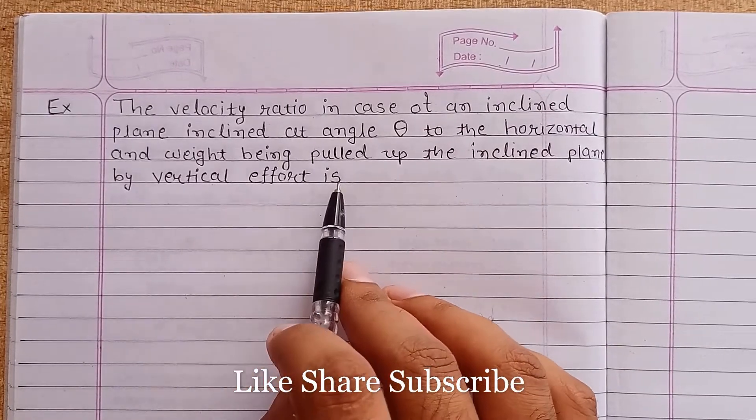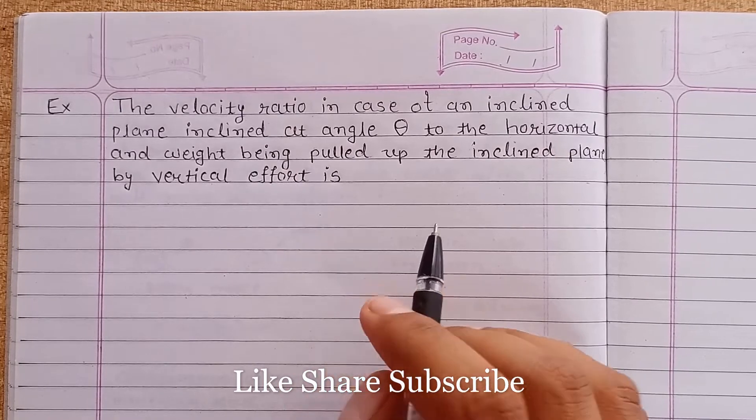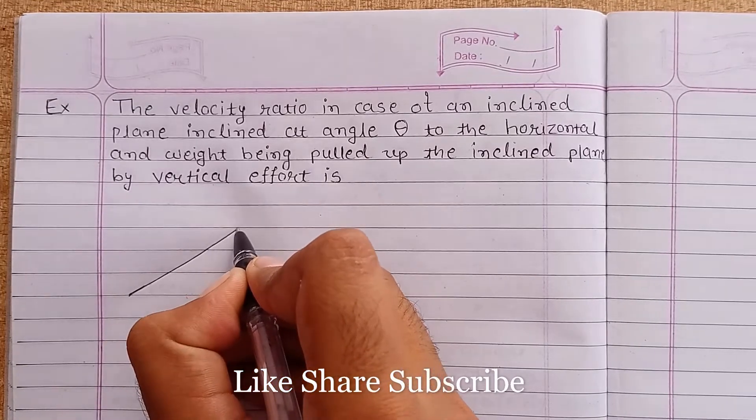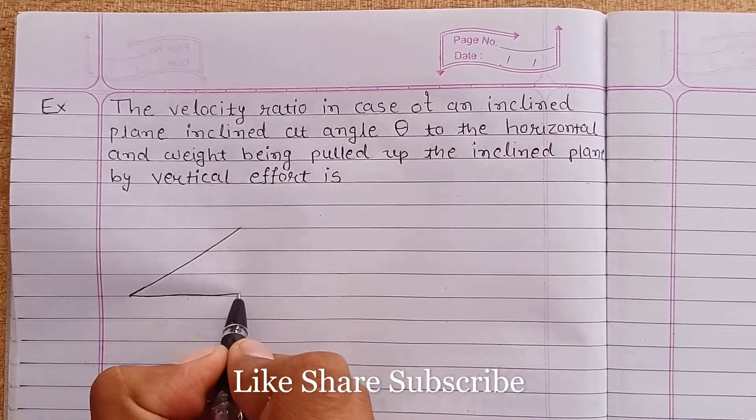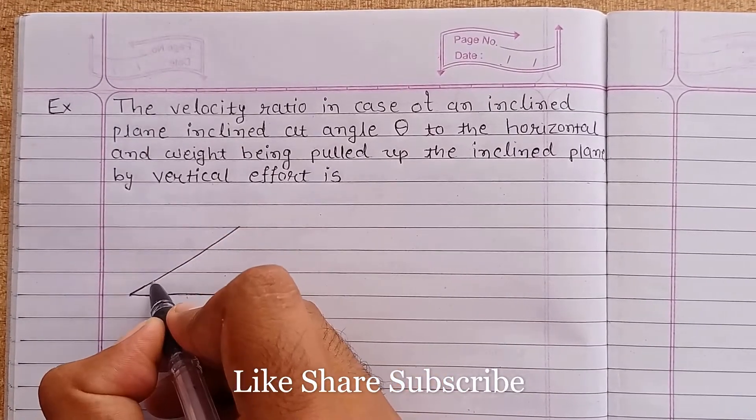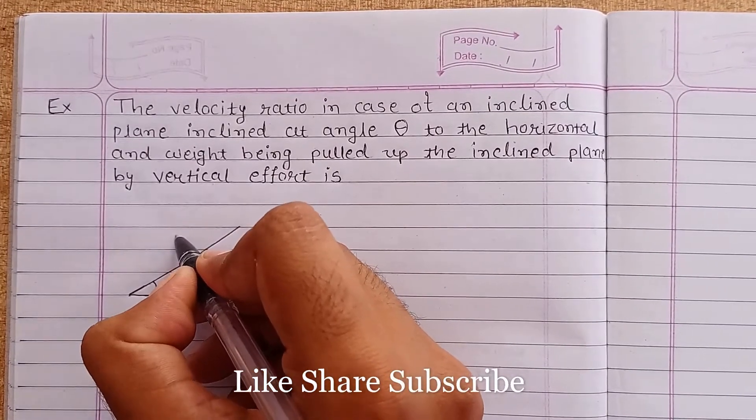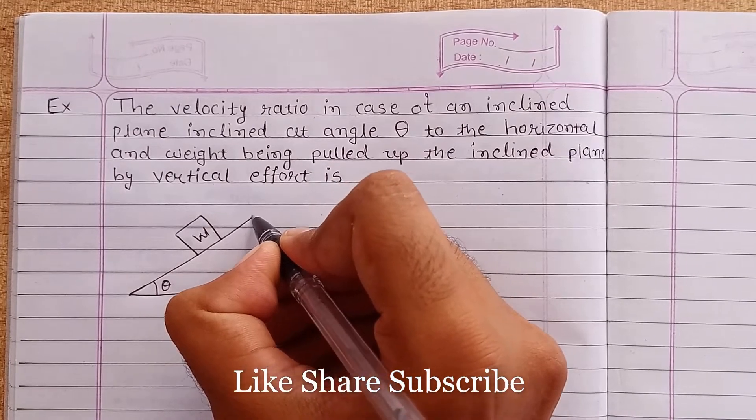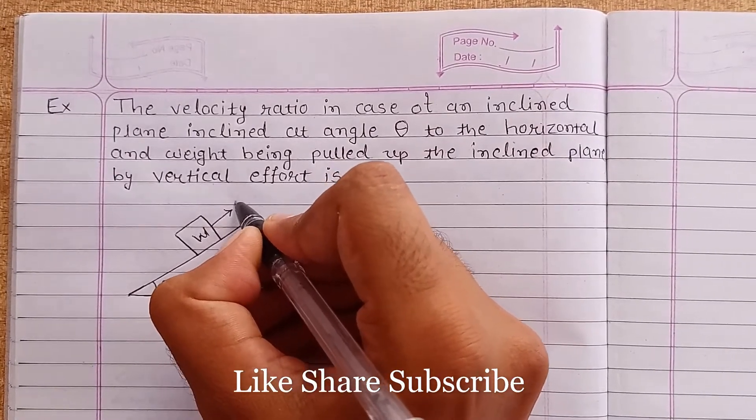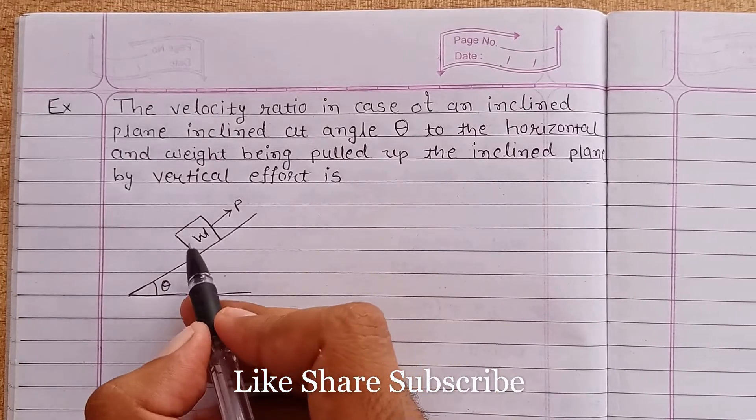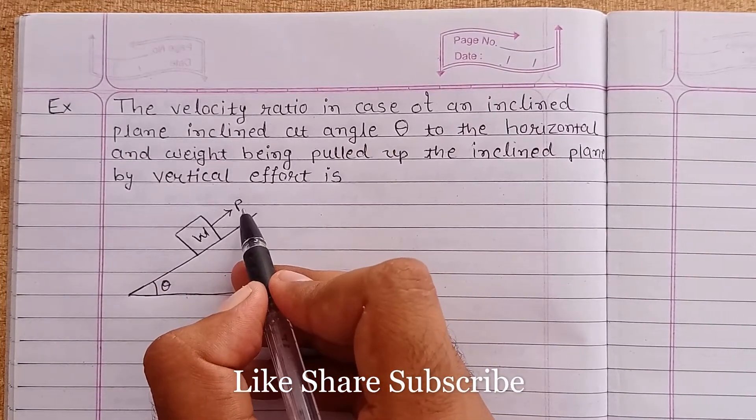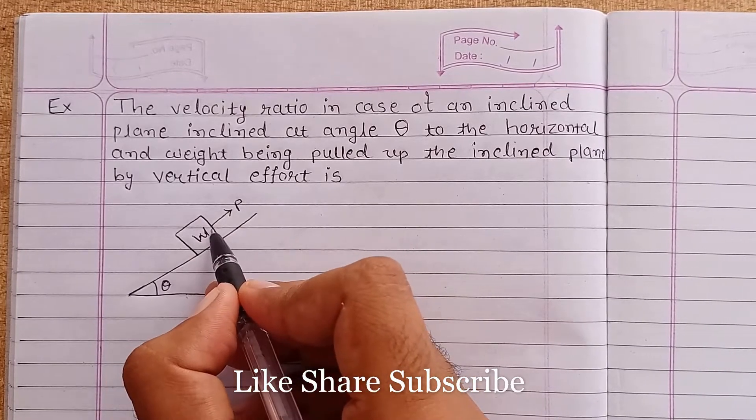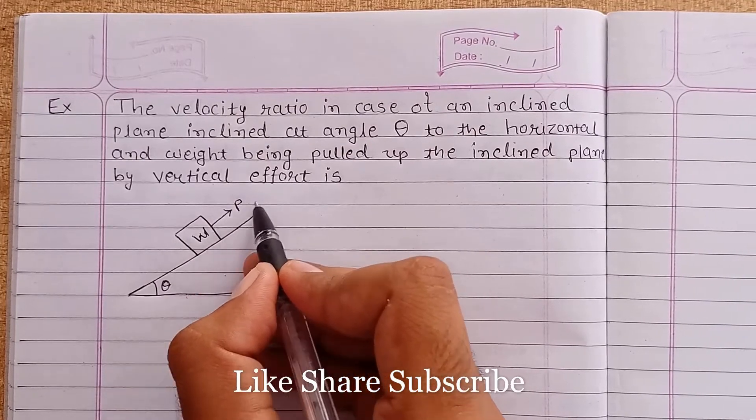So we have to find the velocity ratio. This is the situation: this is the inclined plane inclined at an angle theta, and let's say this is the load W that is being pulled up by some effort. W is the weight and P is the effort. Effort is nothing but the force required to lift this load in the upward direction. This is the force, this is the load.